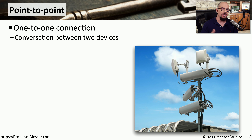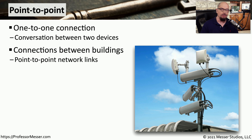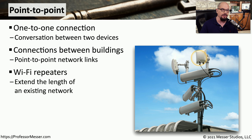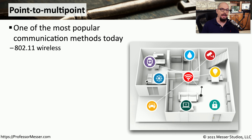Some wireless networks provide a one-to-one connection between the two devices communicating on that network. You might use a point-to-point connection if you're connecting two buildings together with a wireless network, and you would have a directional antenna connecting from one building to the other. This is often used with Wi-Fi repeaters in your home, where the repeaters communicate directly between each other with a point-to-point network connection.